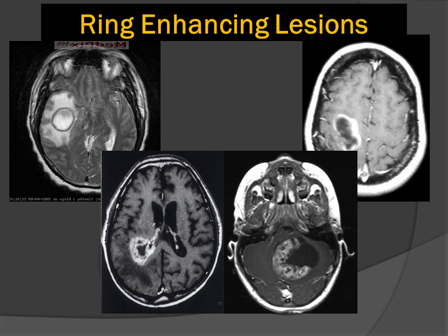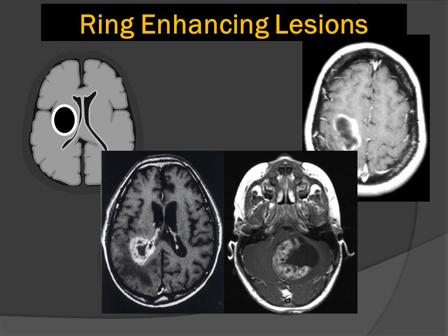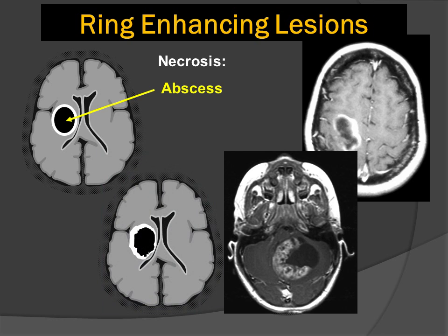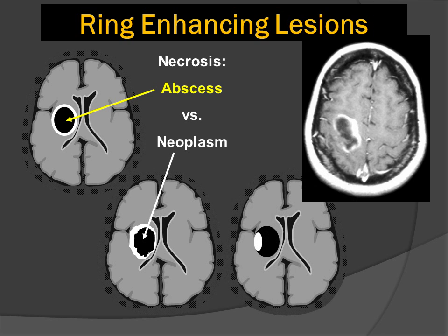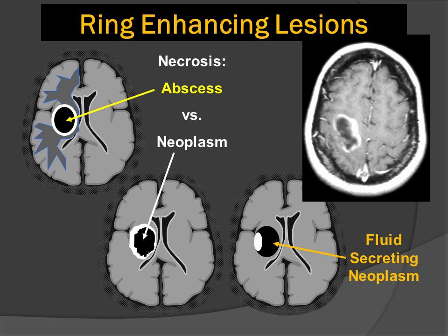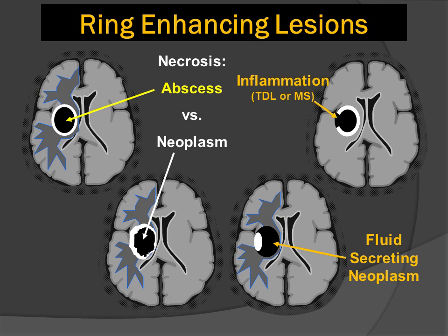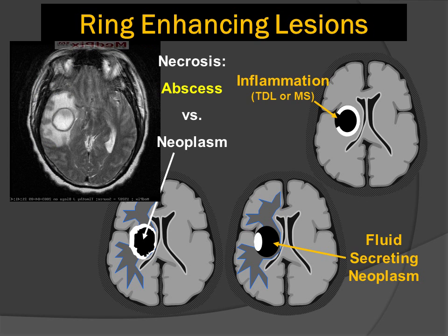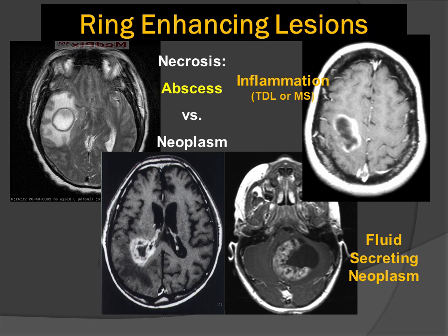Looking at four different types of ring-enhancing lesions: one is round and smooth, suggesting an abscess; one is very irregular with a shaggy inner margin, suggesting a necrotic neoplasm; one shows an incomplete rim of enhancement, often seen in fluid-secreting tumors. In tumefactive demyelination, identifying an incomplete rim of enhancement is critical — it suggests an advancing zone of inflammation. These lesions are sorted out by looking at the center and pattern of ring or rim enhancement.